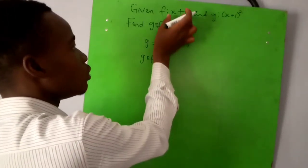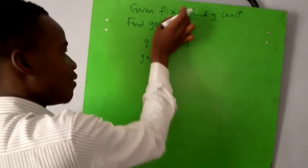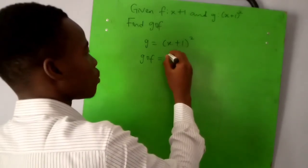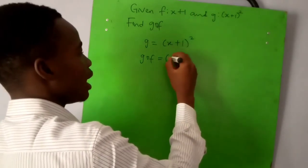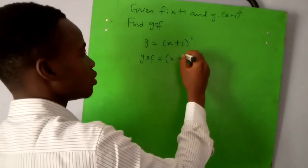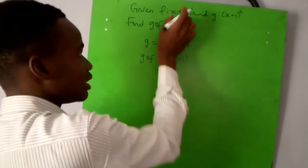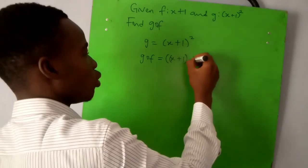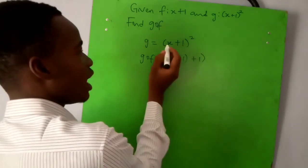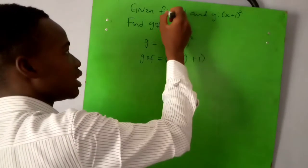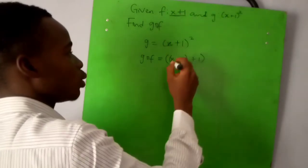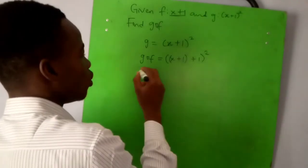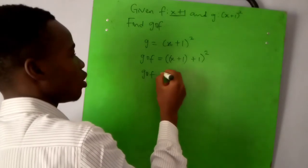We have (x+1), that's the value of f, then plus one. So we have replaced x with the value of f, which is x+1, all squared. So g∘f would be equal to (x+1+1)^2, which is equal to (x+2)^2.